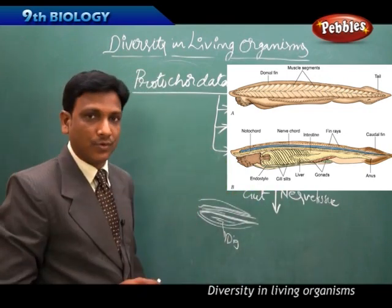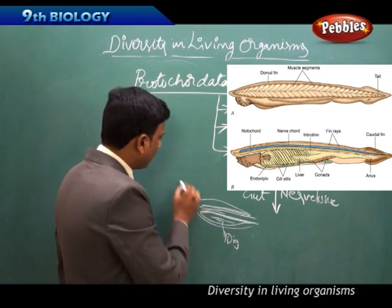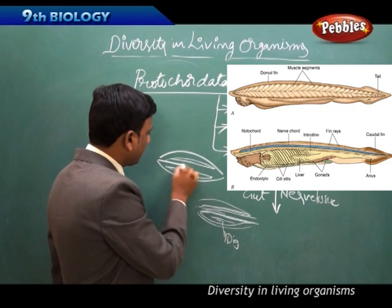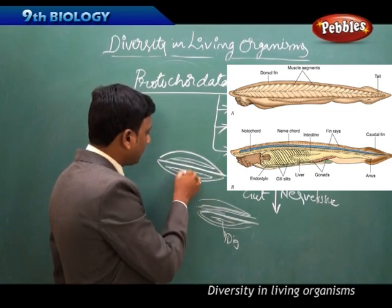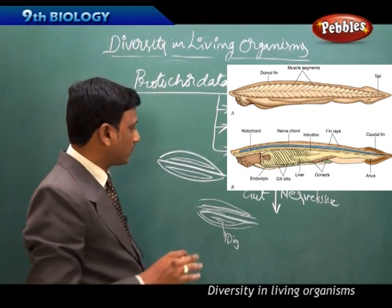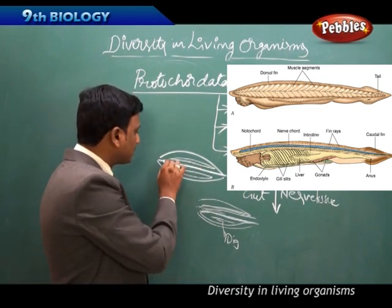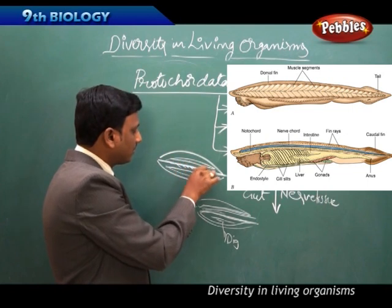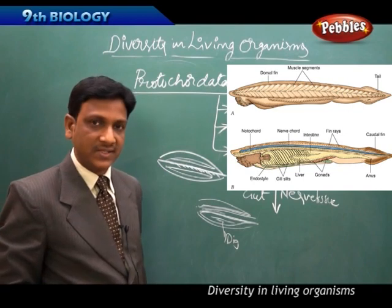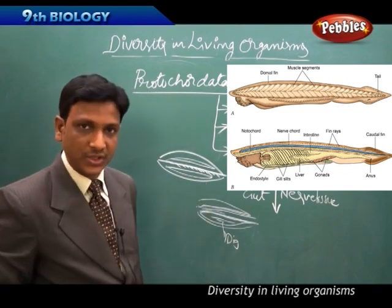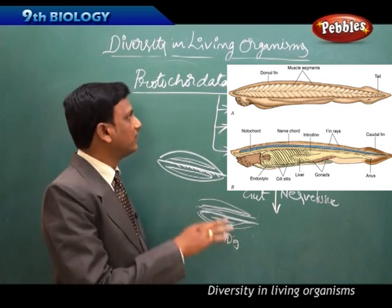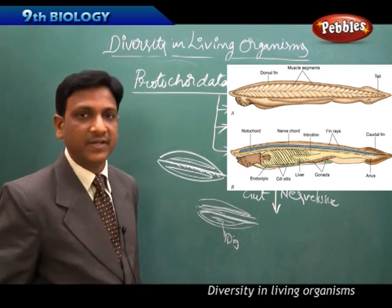The notochord lies between the nervous tissue and the gut. It not only separates the nervous tissue from the gut, but also provides support to the muscles, allowing other body parts to connect to it. This support helps in the movement of the organism — an important improvement over previous phyla.